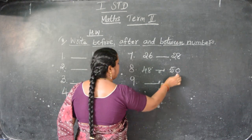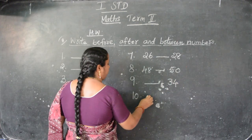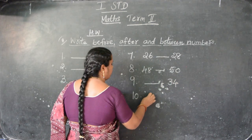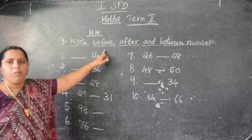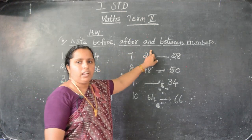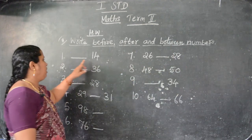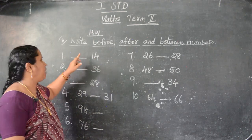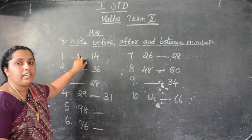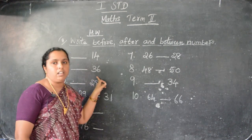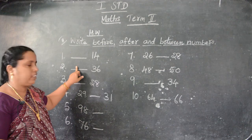You have to write in number. Here see: 14. Before 14, what you have to write here? What number comes before 14? 13 will come. So you have to write here 13. Next: 36. Before 36, what number comes? 35. So you have to write here 35. 28 - before 28, what number you have to write? 27.